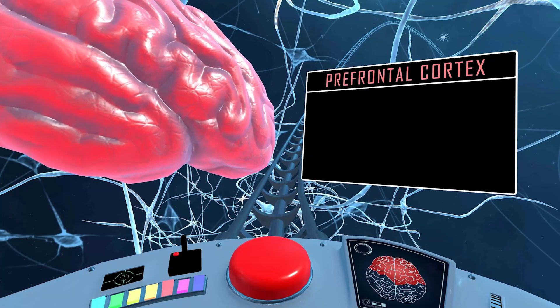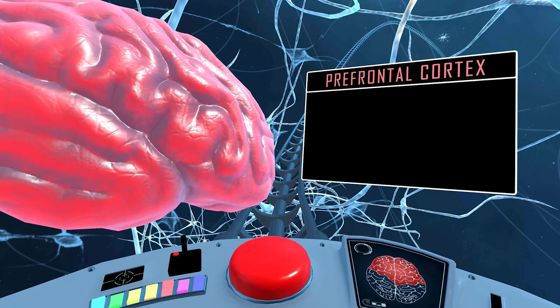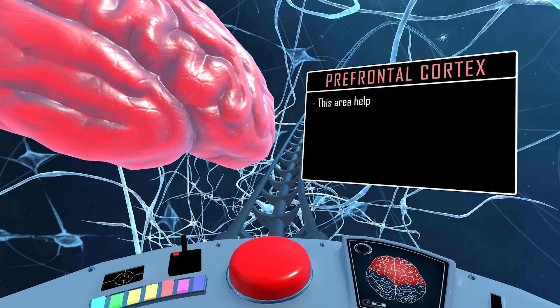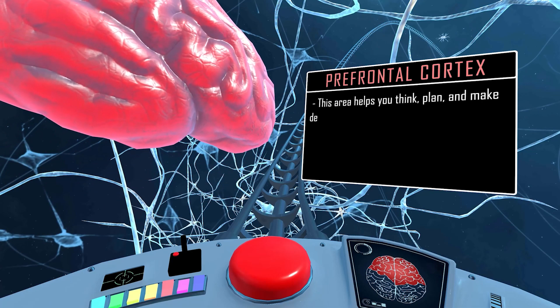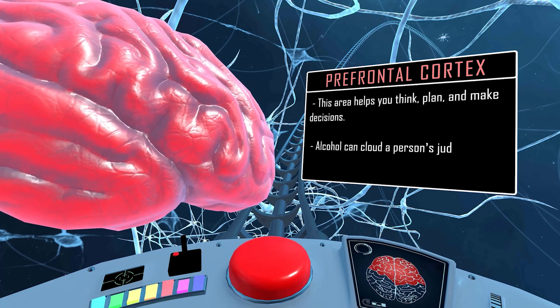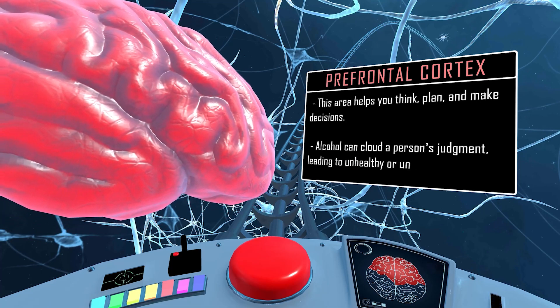Our first stop is the prefrontal cortex, located on the surface of the brain just behind your forehead. This area helps you think, plan, and make decisions. Alcohol can cloud a person's judgment, leading to unhealthy or unsafe decisions.